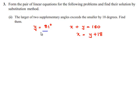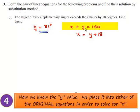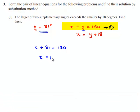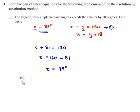Now substitute the value of y, which is 81, in equation number 1. So x plus 81 is equal to 180. We get x is equal to 180 minus 81. Therefore, x is equal to 99 degrees. Therefore, the two angles are 99 degrees and 81 degrees.